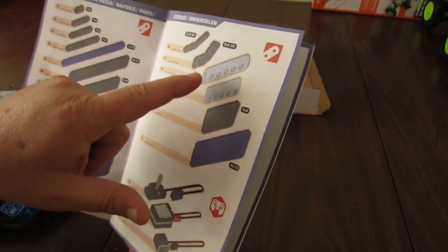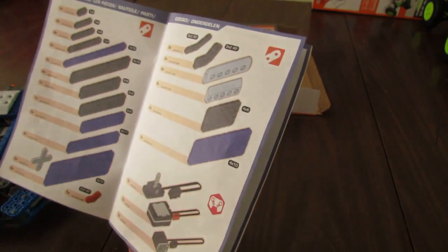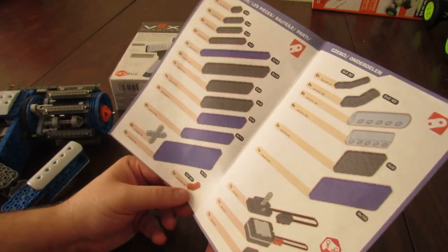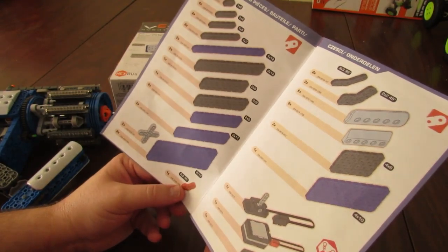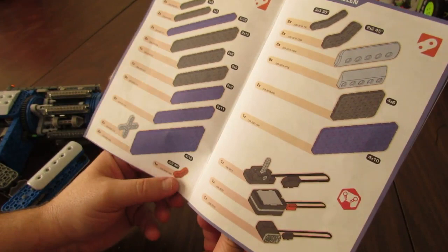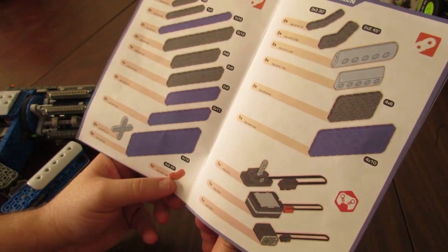The slopes and the curved parts were in sets from last year as well, but it's nice to have them in quantity in this set. This 2x2 45-degree bent beam might be new.